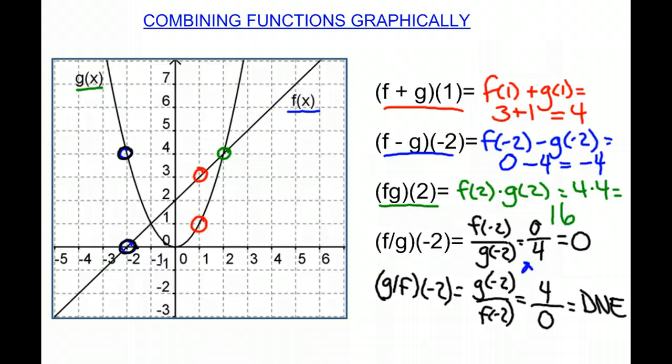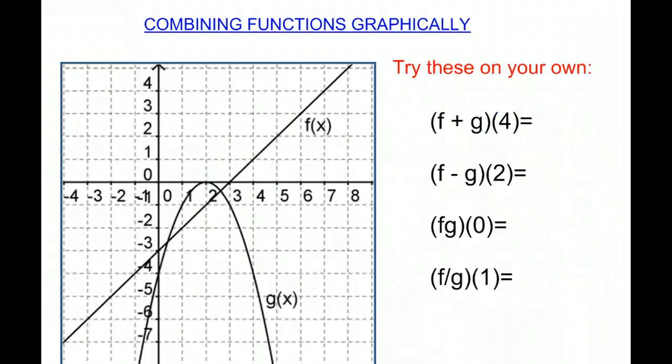All right. And that is how you find functions graphically when combining them. So I'd like you to try some. Here's a new graph, and I'd like you to do this on your own: f plus g of 4, f minus g of 2, f times g of 0, and f divided by g of 1. Good luck, and thank you for listening.